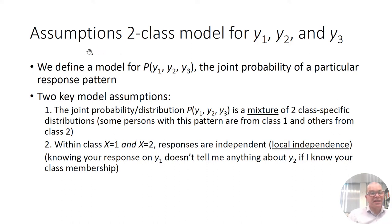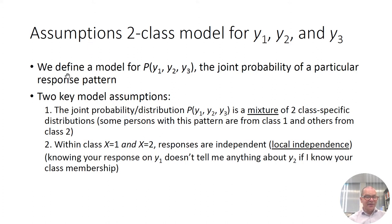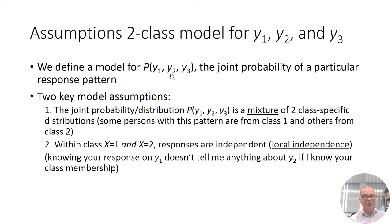What are the basic assumptions of a latent class model? Here we're dealing with a two-class model for three indicators. It's important to be aware that we are defining a model for the probability of having a particular response pattern. We are defining a model for the probability that you have a pattern of all ones, or a pattern 1-1-2, a pattern 1-2-1, etc. So we have eight different patterns and we are specifying a probability for those patterns.